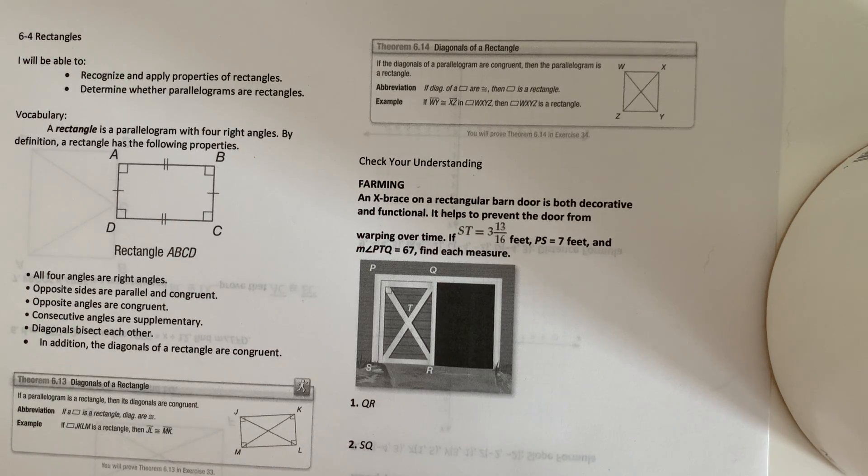All right guys, we're doing 6-4 today, which is rectangles, some vocabulary for us. A rectangle is a parallelogram with four right angles. By definition, a rectangle has the following properties.